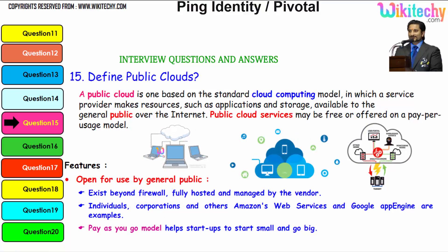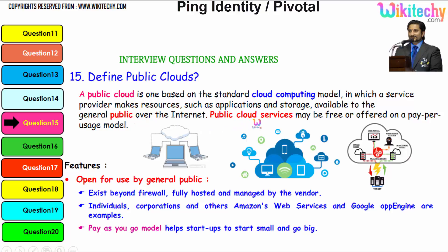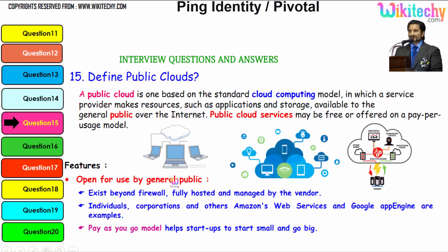Moving further to the public cloud definition: a public cloud is based on the standard cloud computing model in which a service provider makes resources such as applications and storage available to the general public over the internet. Public cloud services may be free or offered on a pay-per-usage model. It is open for use by the general public, exists beyond the firewall, and is fully hosted and managed by the provider. Individuals, corporations, and other means — web services and Google App Engine — are typical examples.